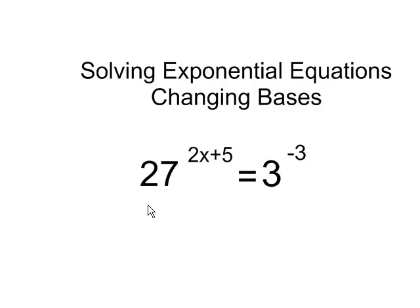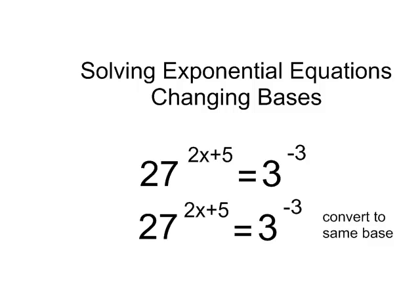We cannot equate the exponents yet because the bases aren't the same. What we need to do is move these so they both have the same base. In this case we're going to choose base 3. I know that I can rewrite 27 as 3 to the exponent 3, and so I'm just going to make that substitution.